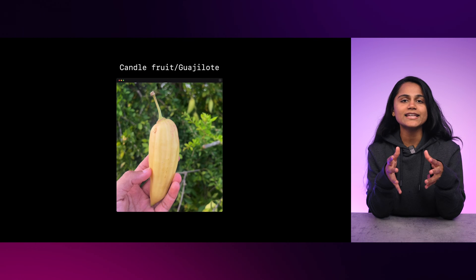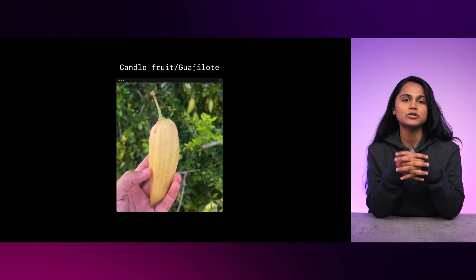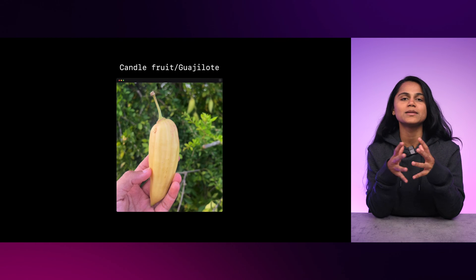Modern AI use cases like image recognition use vector search to add context and depth to complex objects and make them searchable. In this video, we will talk about vector functions and the different ways you can do vector search in SurrealDB.